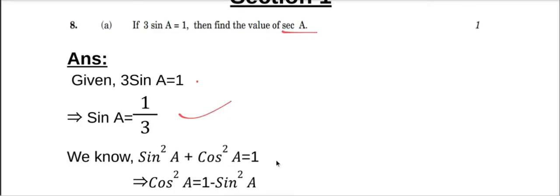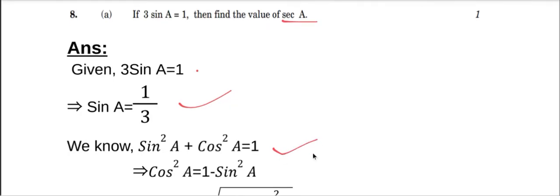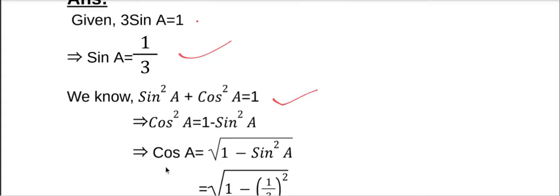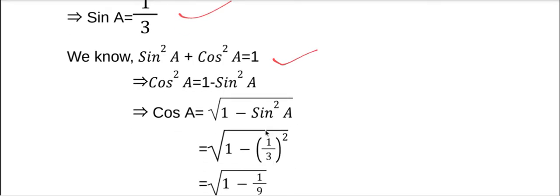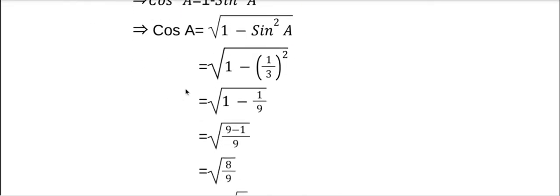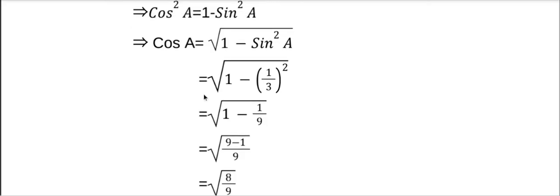We know the relation sine squared a plus cosine squared a equal to 1. Therefore, simplifying, cos squared a equal to 1 minus sine squared a. That implies cos a equal to root over 1 minus sine squared a. We will put the value of sine a, that is equal to 1 third, so cos a equal to root over 1 minus 1 third whole square.